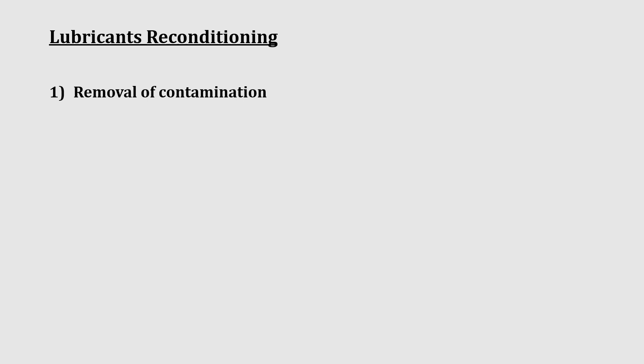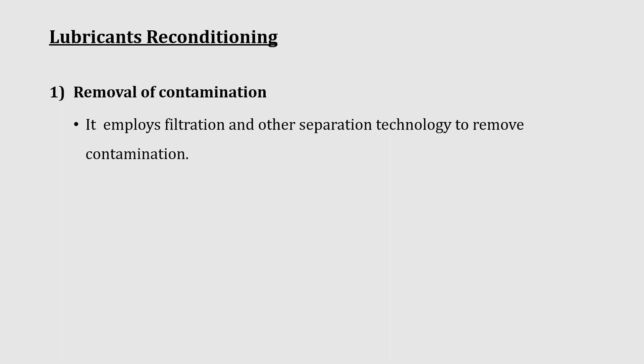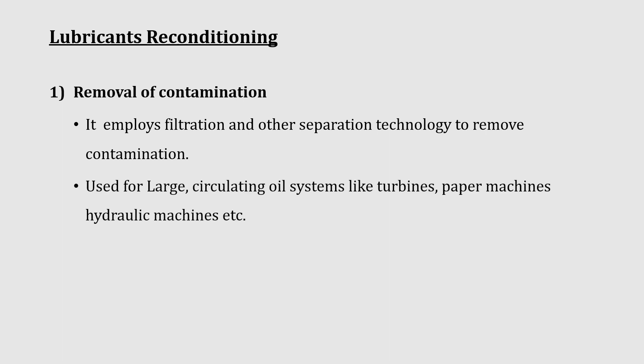We remove contaminated particles from lubricating oil. We use filtration or other separation technology. This method is used for large and circulating oil systems like turbines, paper machines, and hydraulic machines, but sometimes it is also used for gearbox splash lubrication.